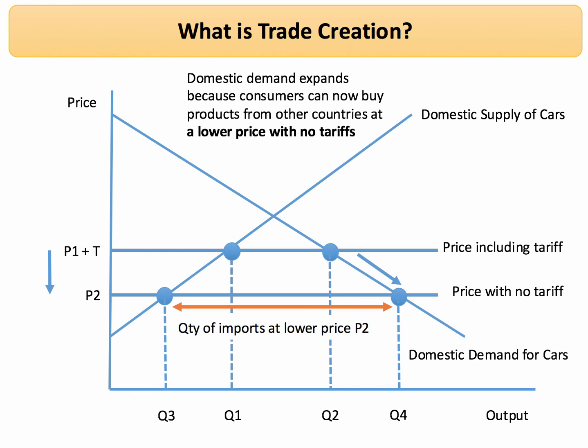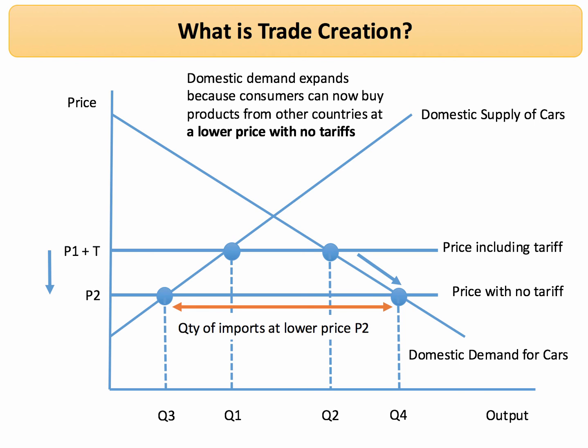That is the essence of trade creation. Under certain assumptions you can make the case for saying that welfare will have increased. Domestic producer welfare has fallen, but there's been a substantial gain in domestic consumer welfare because they now have access to cheaper imports. So that is the essence of trade creation.